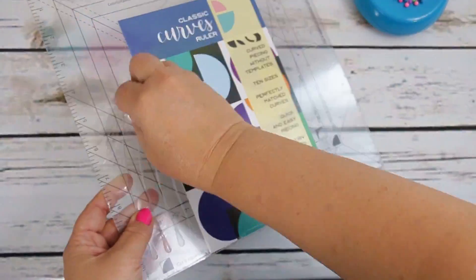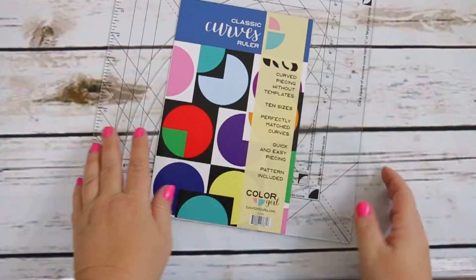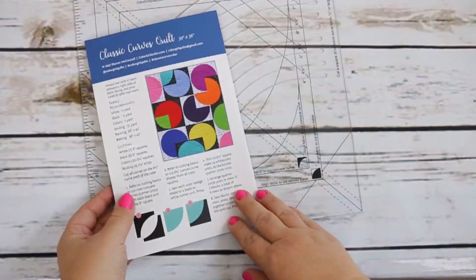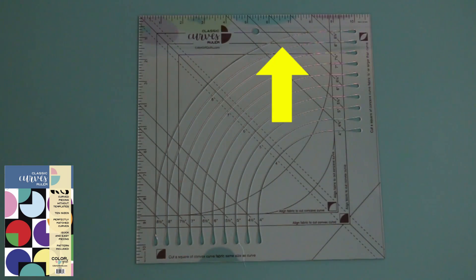And in order to open up your Classic Curves Ruler, just use a straight pin and remove all the plastic, but hold on to that pretty piece of paper that is your instructions. The Classic Curves Ruler is an 11-inch acrylic square. On two sides of the ruler, you will notice measurements with 1/8-inch increments.